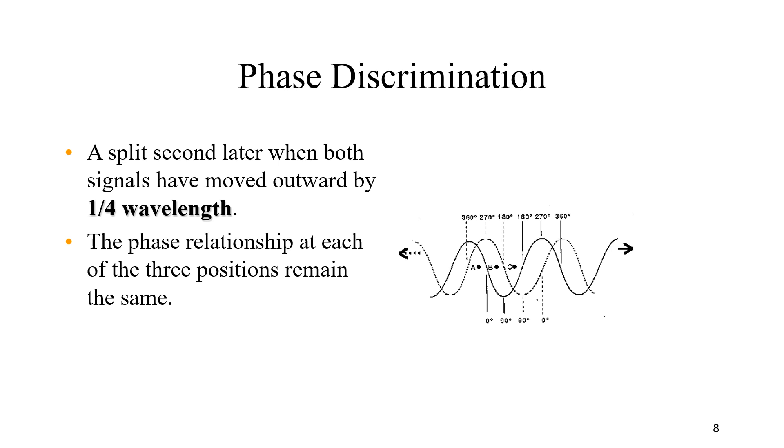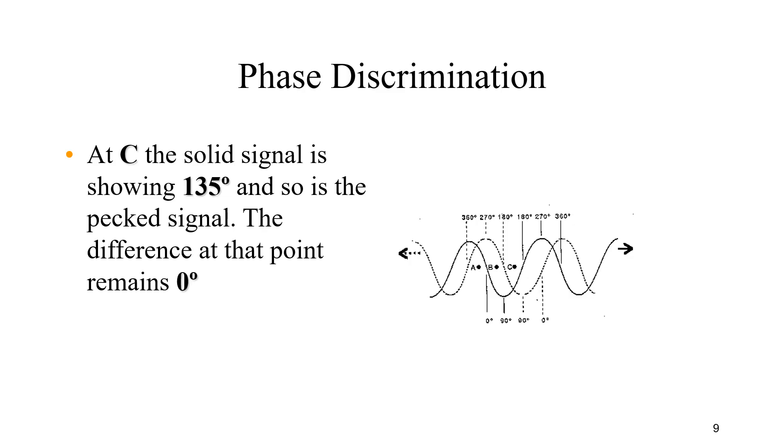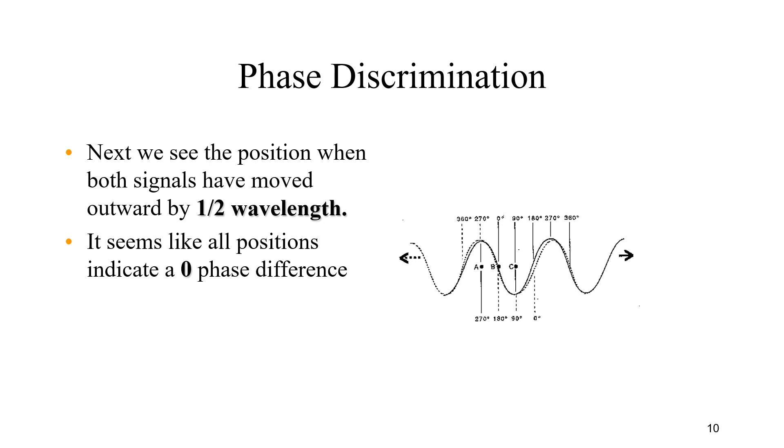If a master and slave transmit simultaneously, they are known to be in-phase. I'll show you here how a simultaneous transmission, which is in-phase transmission, differs from when a wave slightly moves forward and how the phase difference or phase discrimination is created.